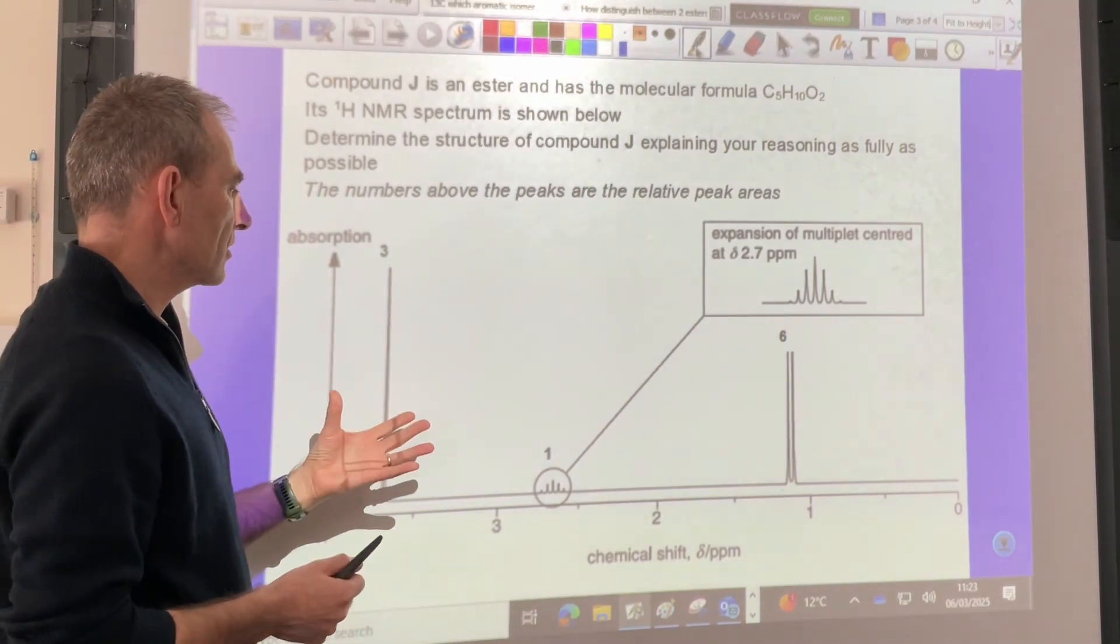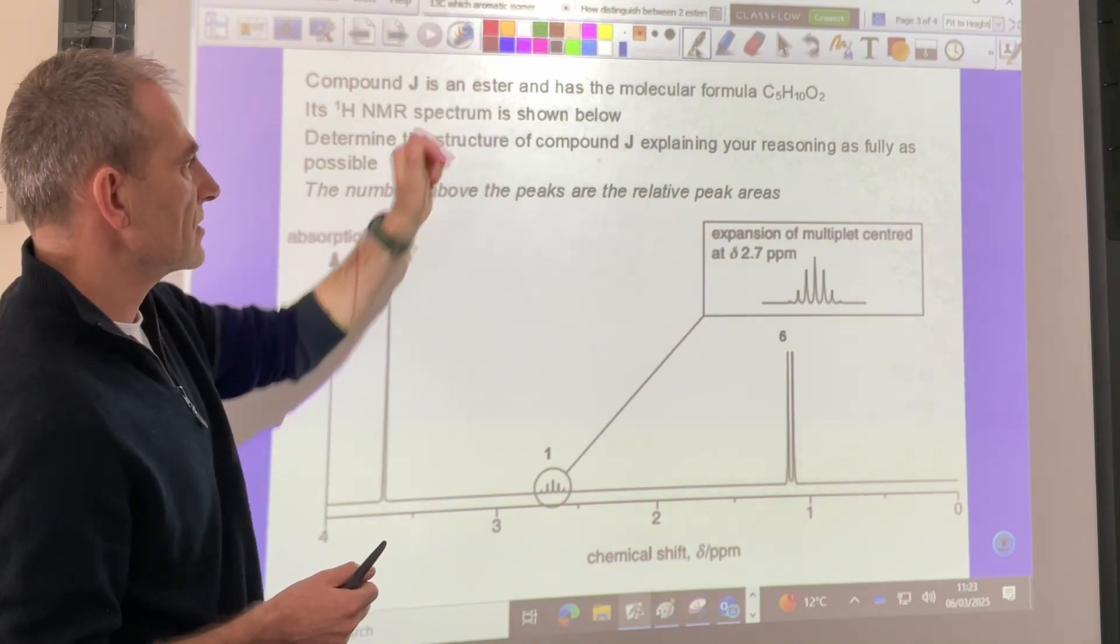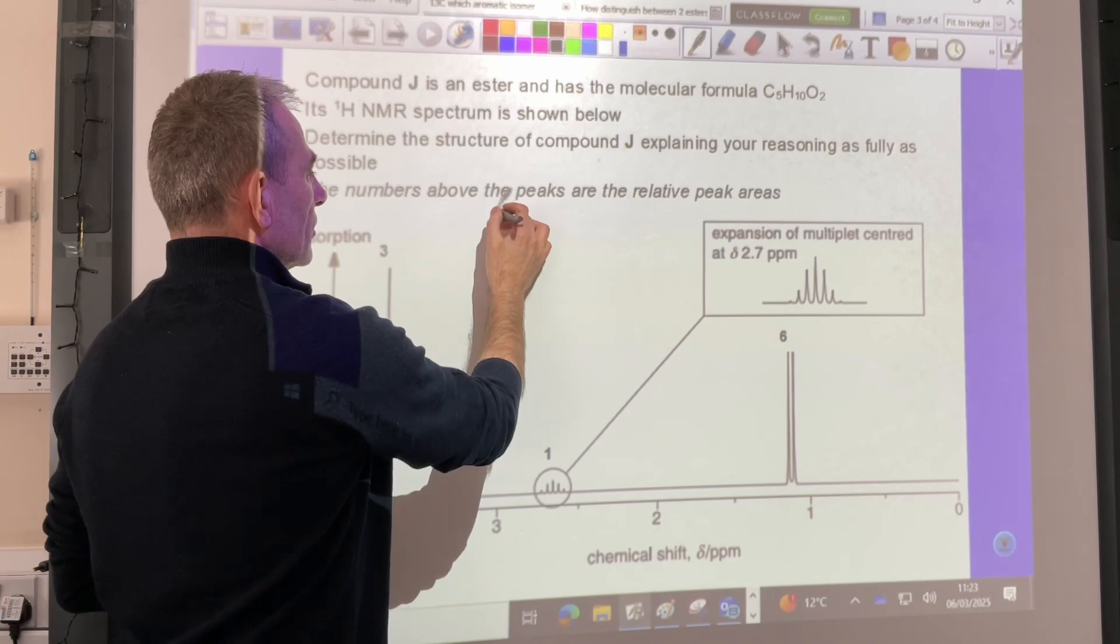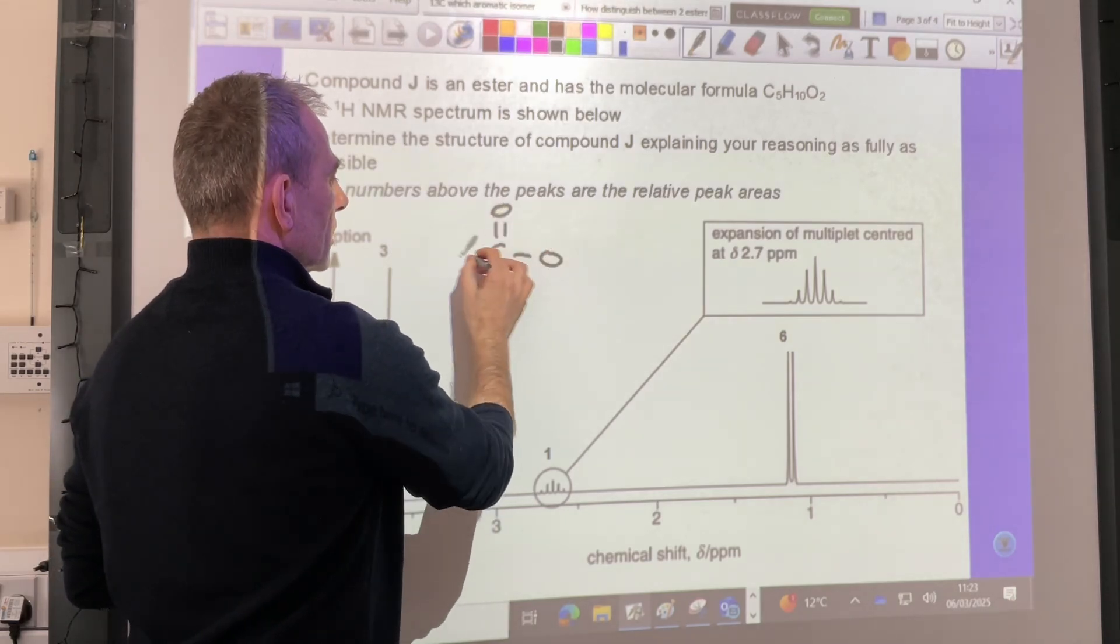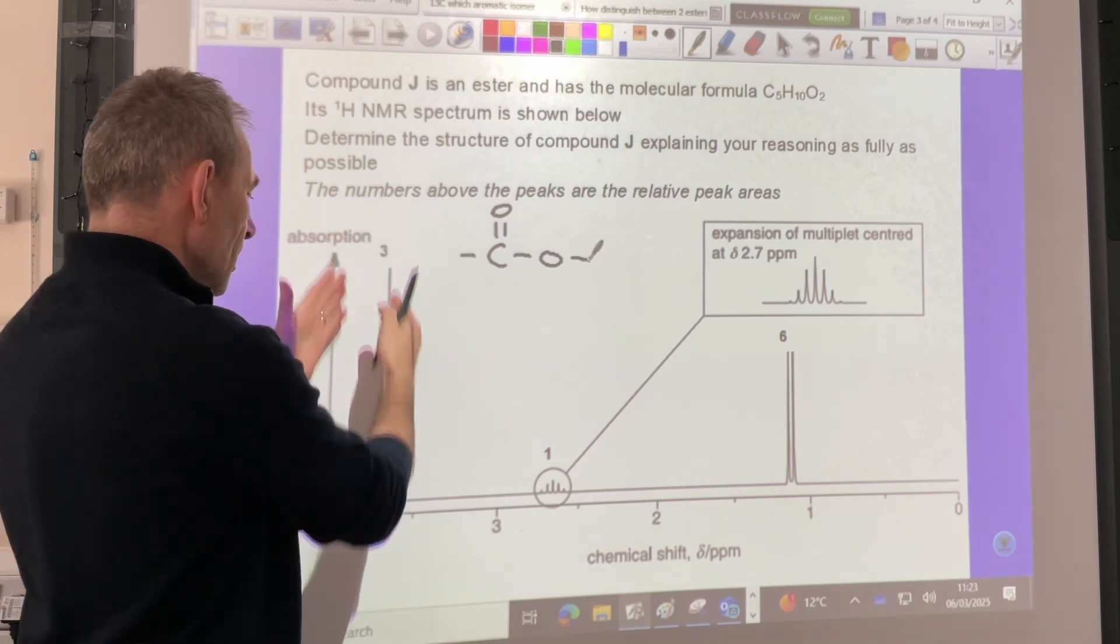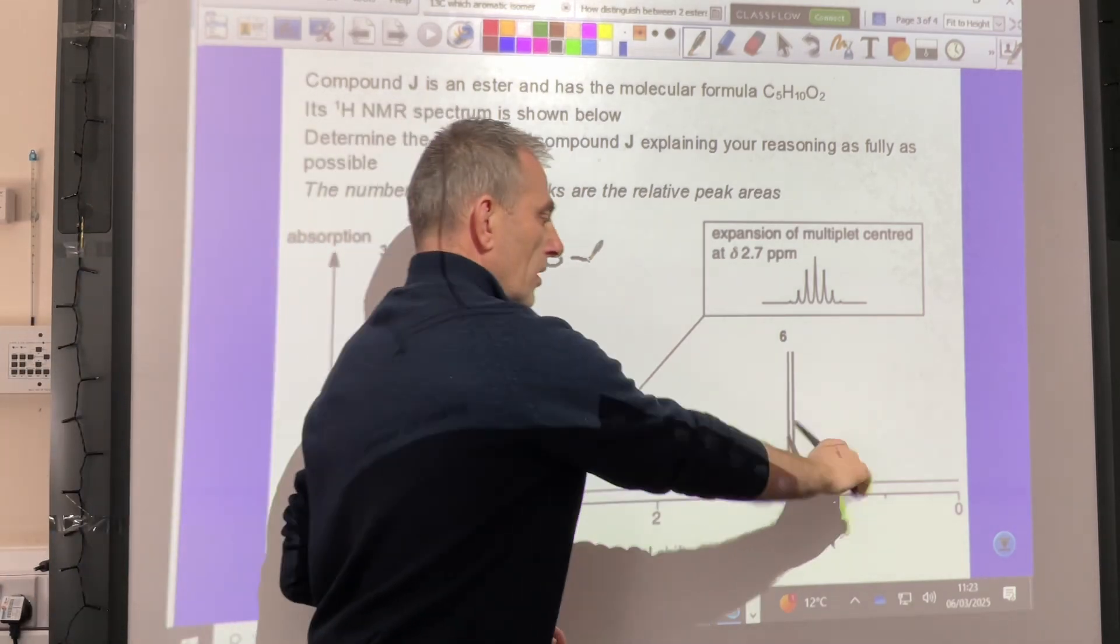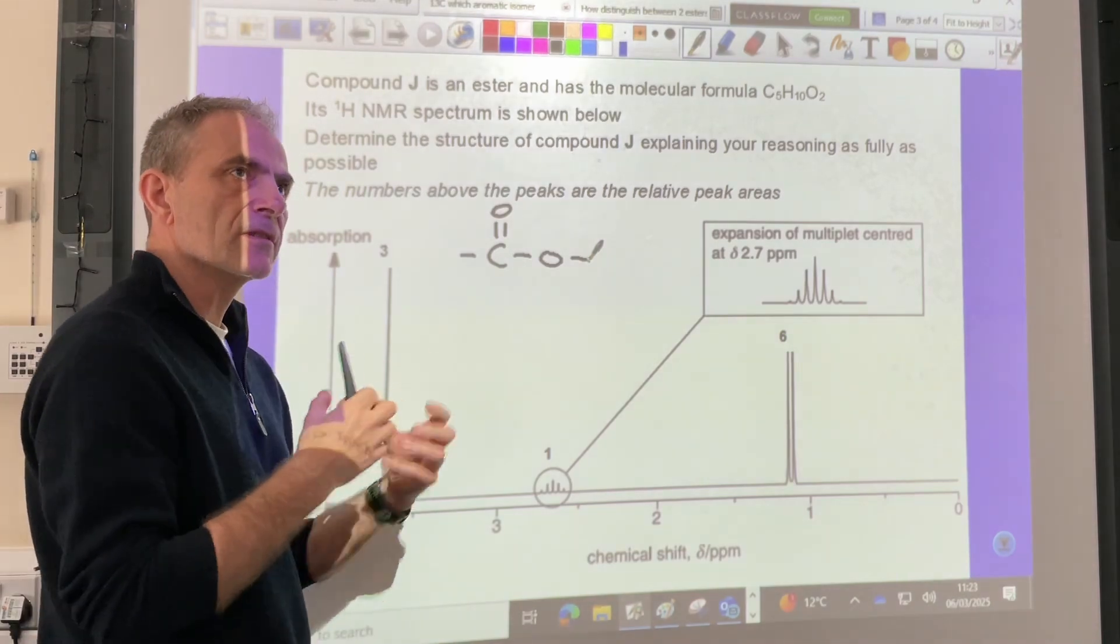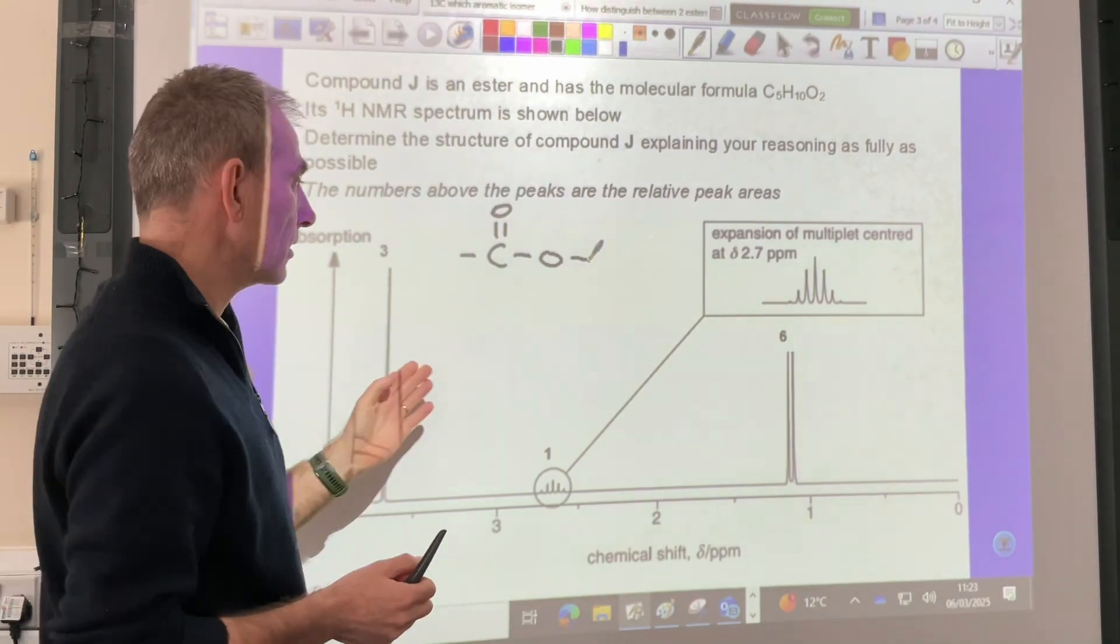So the way I do something like this, I know it's an ester, so I know that it's got to have a C double bond O with a single bond O next to it, so it's definitely got that in it. And we'll just start on the left hand side, I'm just going to work my way over to the right. I'm going to do the same thing for each signal.